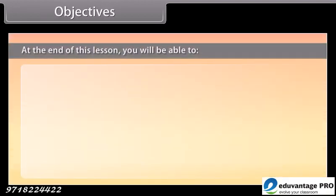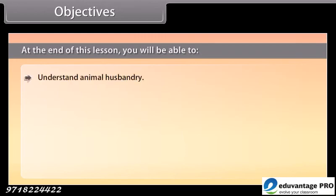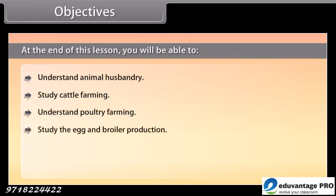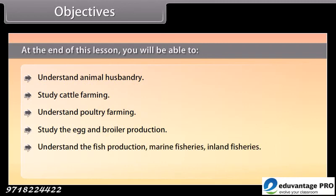Objectives. At the end of this lesson you will be able to: understand animal husbandry, study cattle farming, understand poultry farming, study the egg and broiler production, understand the fish production, marine fisheries, inland fisheries, and study beekeeping.